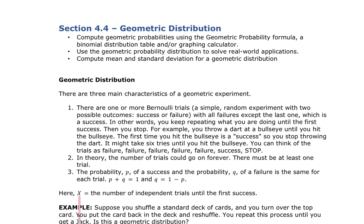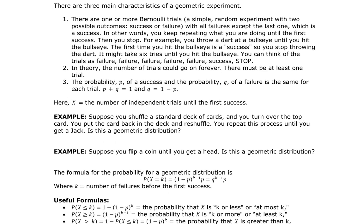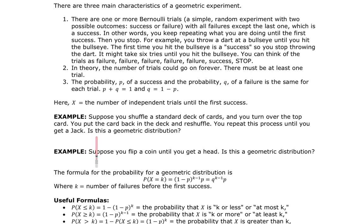The random variable X is the number of independent trials until the first success. Suppose you are shuffling a deck of cards and you turn over the top card, put the card back in the deck, and reshuffle. You repeat this process until you get a jack. This is a geometric distribution because you keep going until you get a jack — failure, failure, success. You are replacing each card, so it doesn't change the probability of getting a jack.